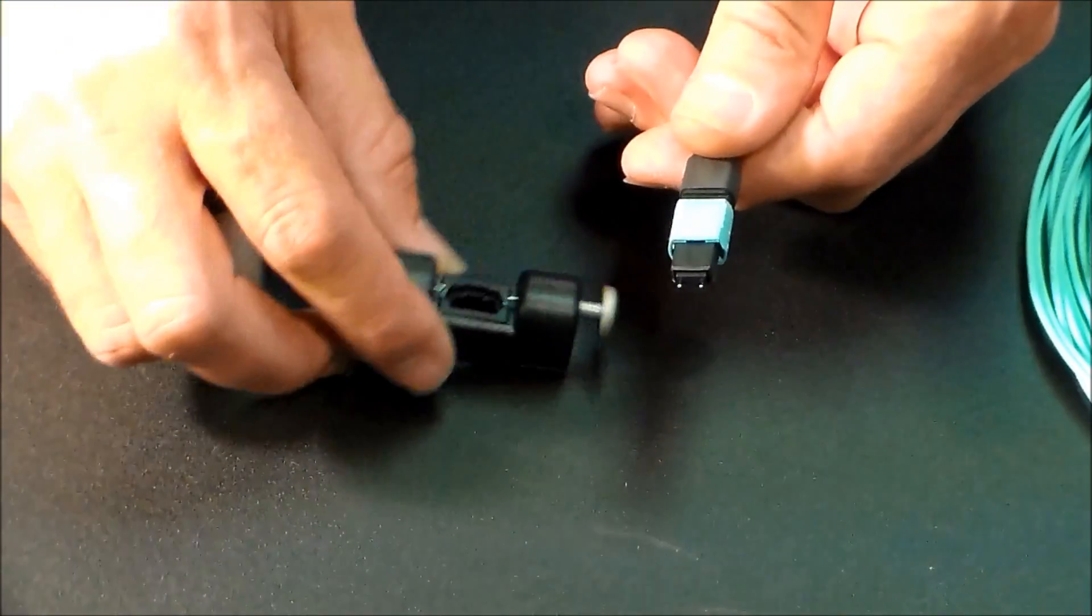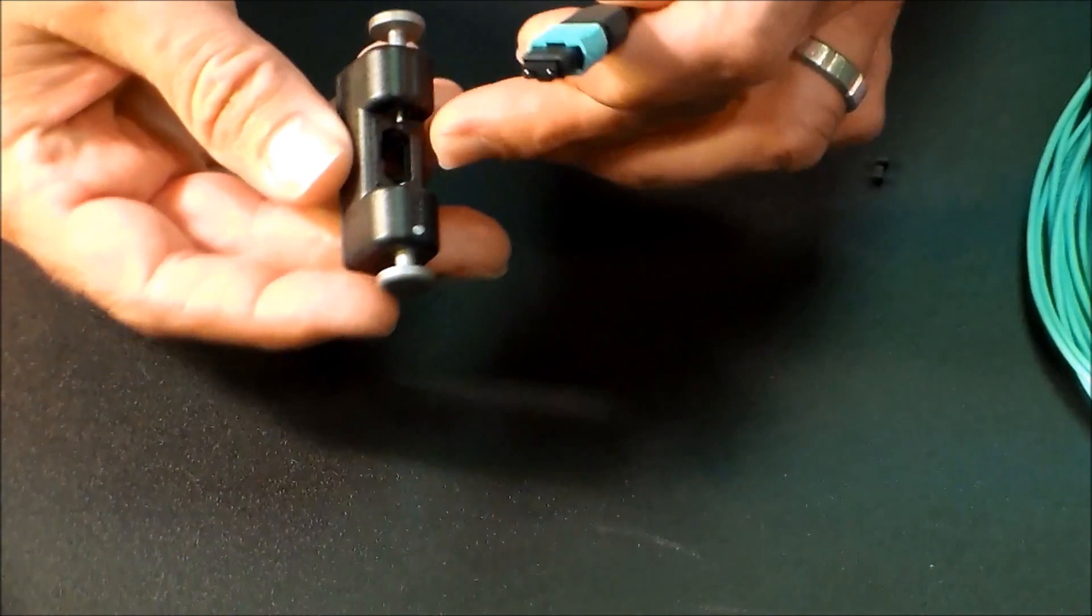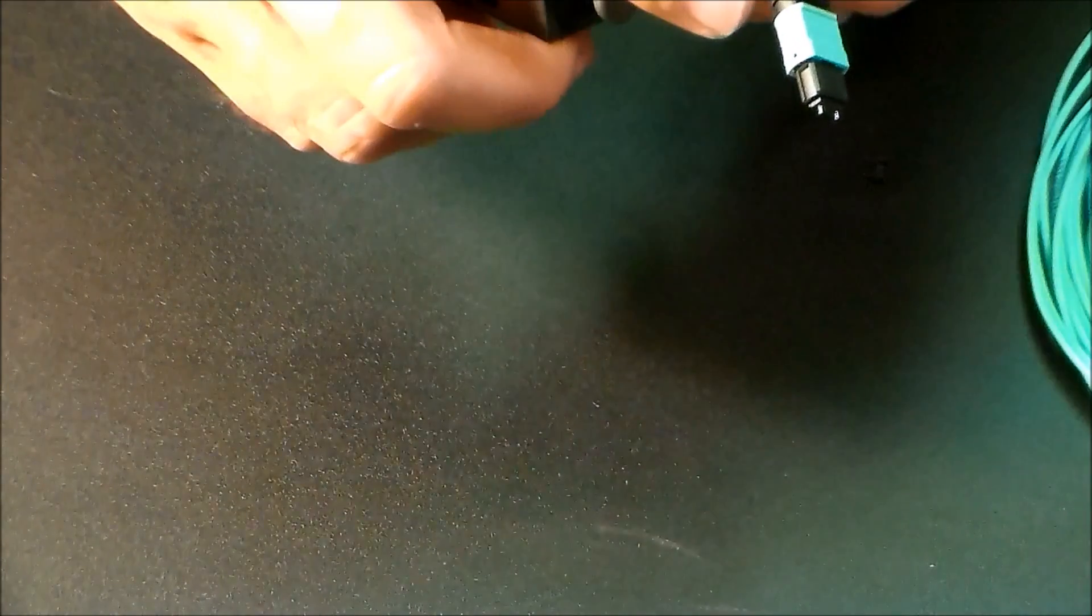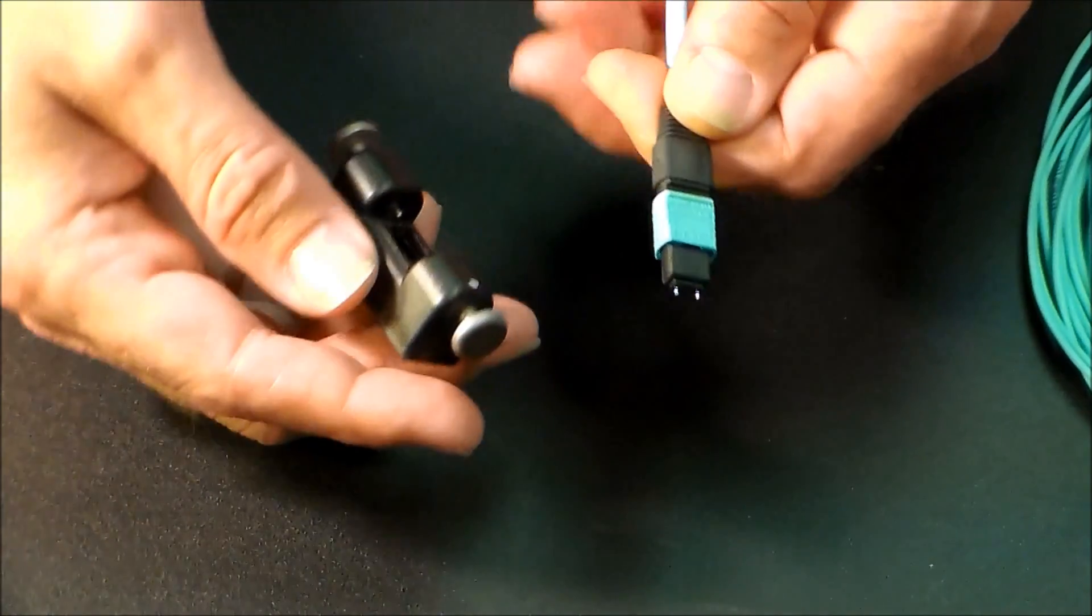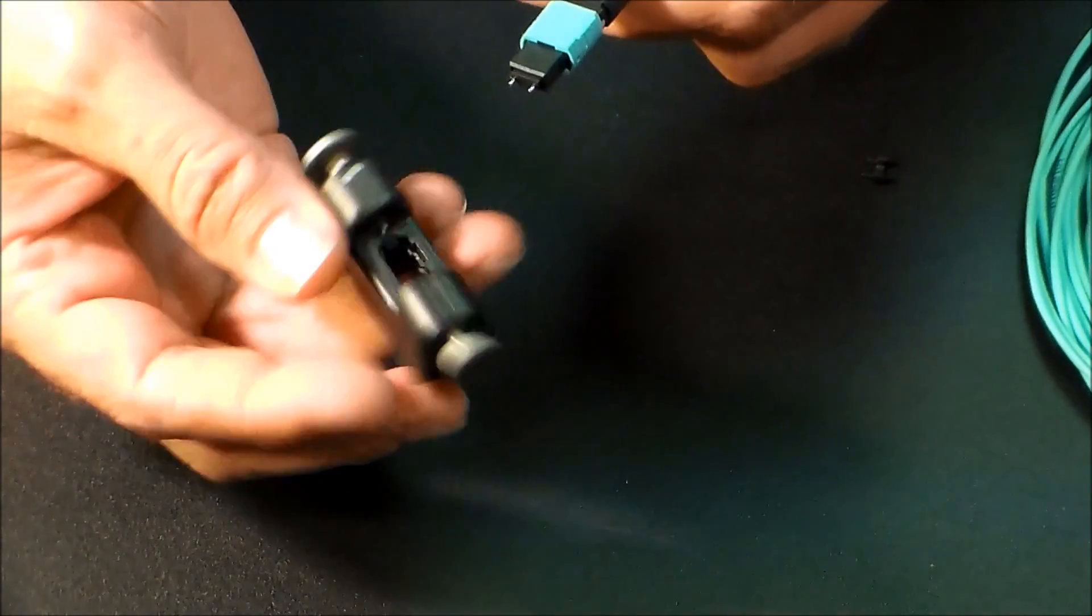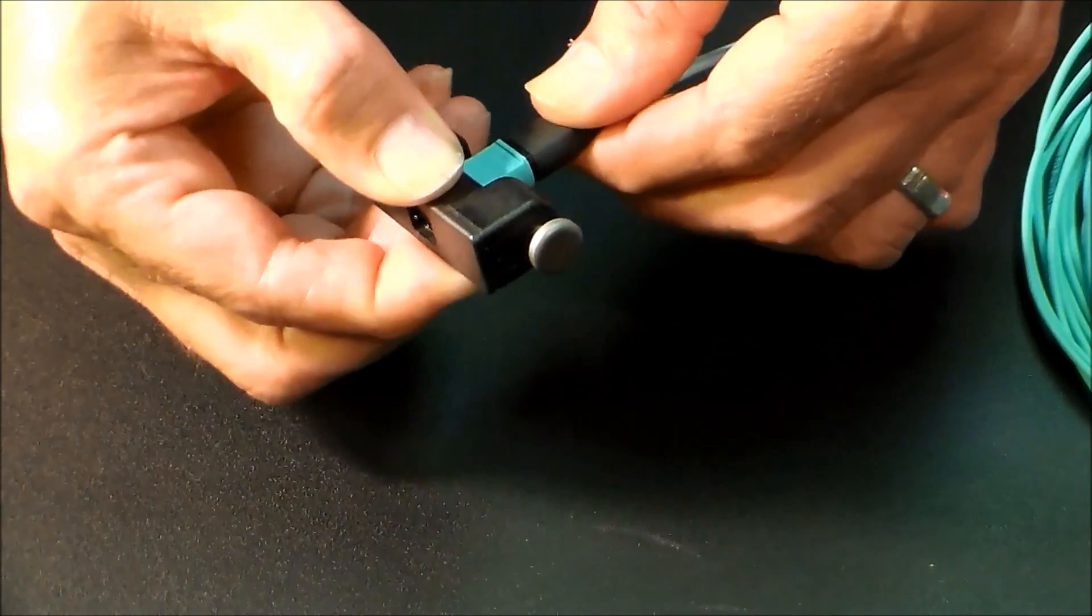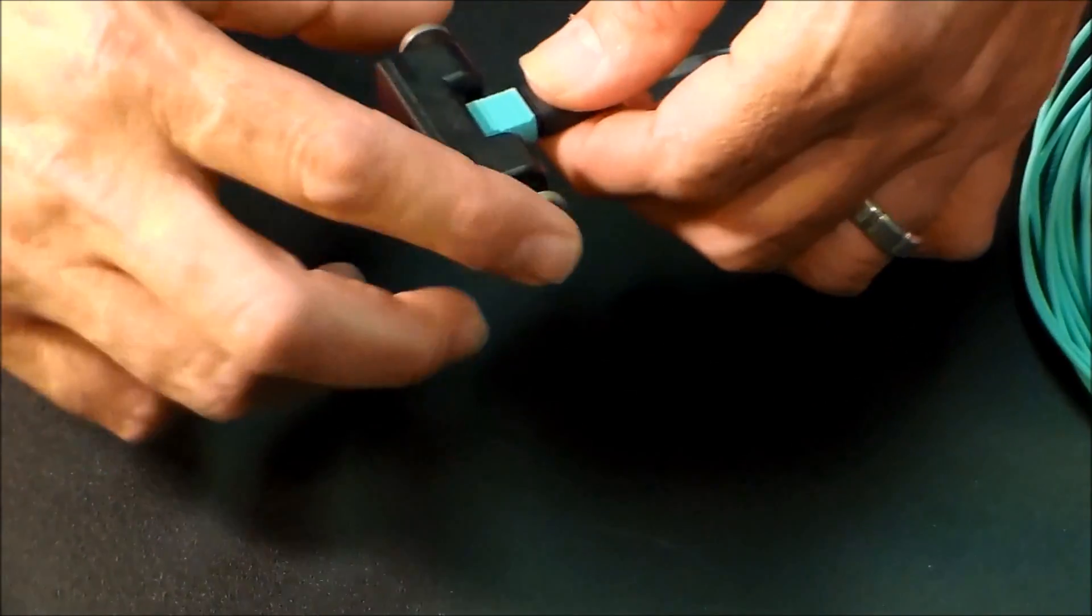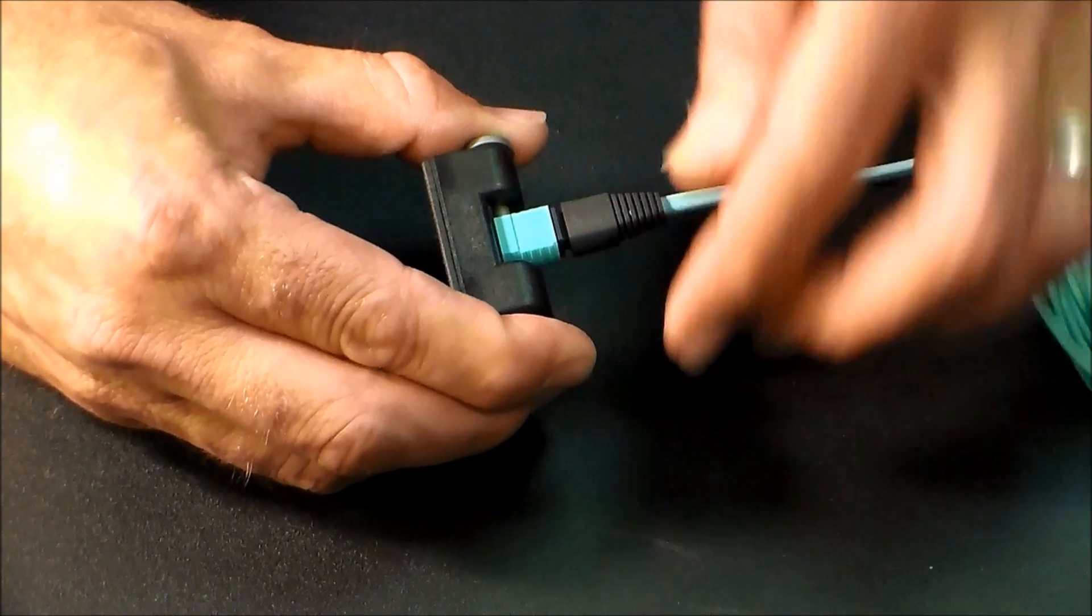So here I have a removal tool. Inside the removal tool, it's got two pins, and the pins push into the very small holes that are on the side of the MTP connector. I'm just going to snap this in all the way, as if it was into an adapter. I'm going to press both of these pins, and it just automatically popped this out just a hair bit.